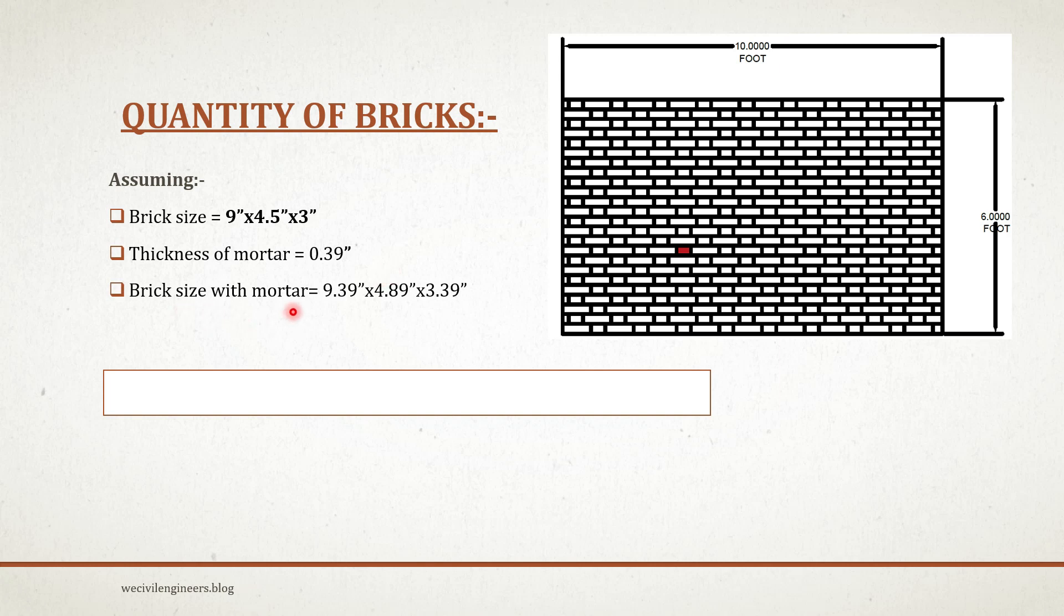So brick size with mortar equals 9.39 inches by 4.89 inches by 3.39 inches. That is 9 plus 0.39 inches, 4.5 plus 0.39 inches, and 3 plus 0.39 inches.